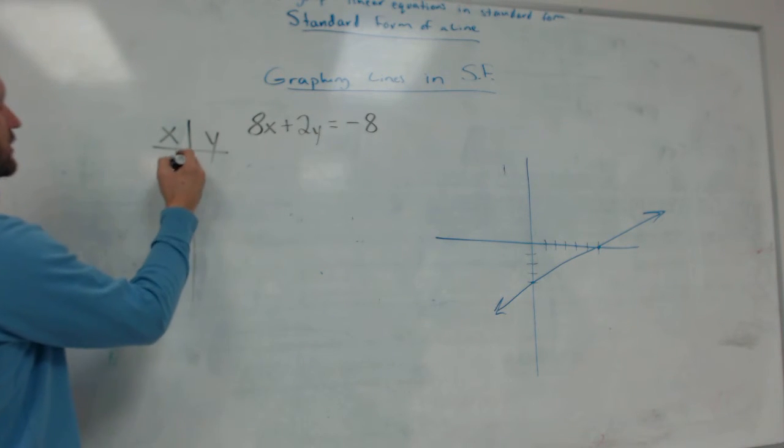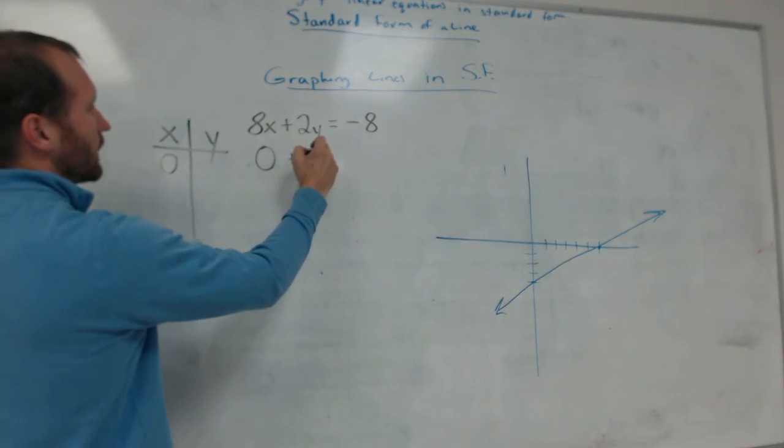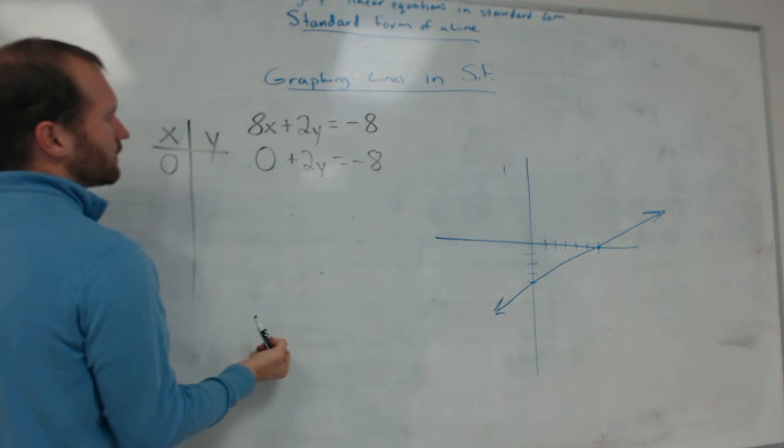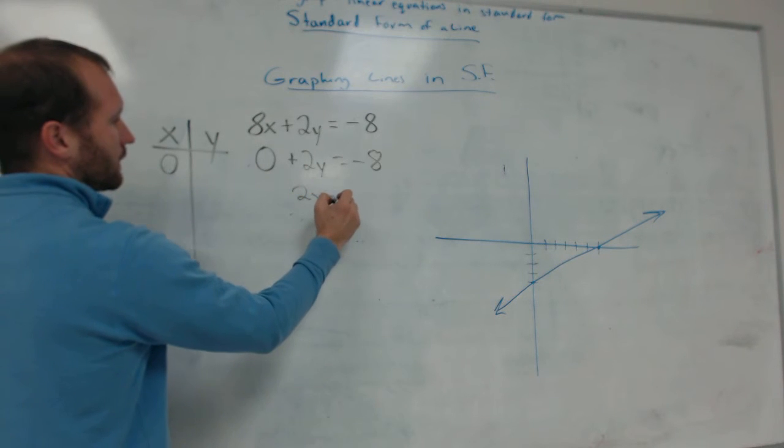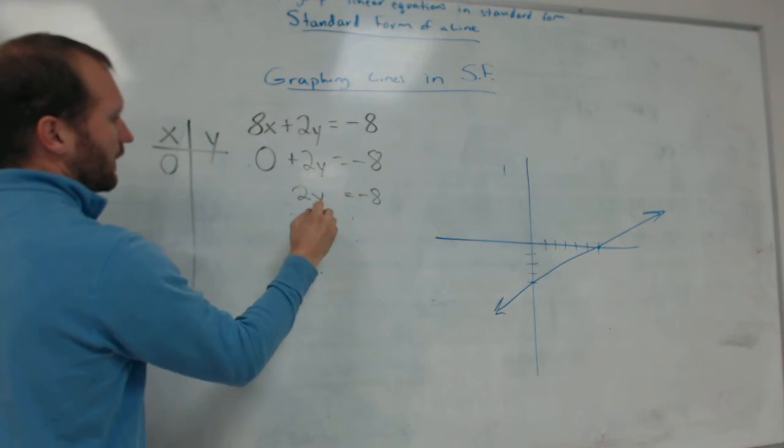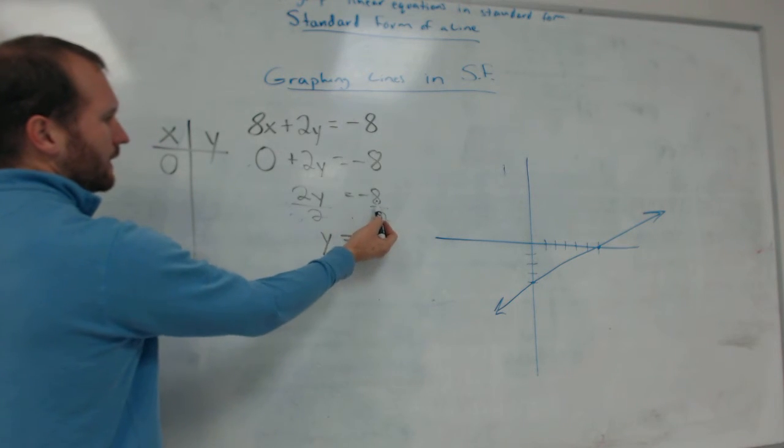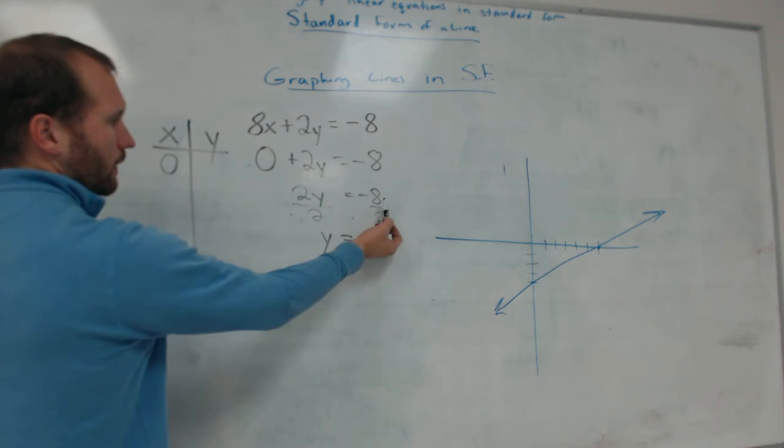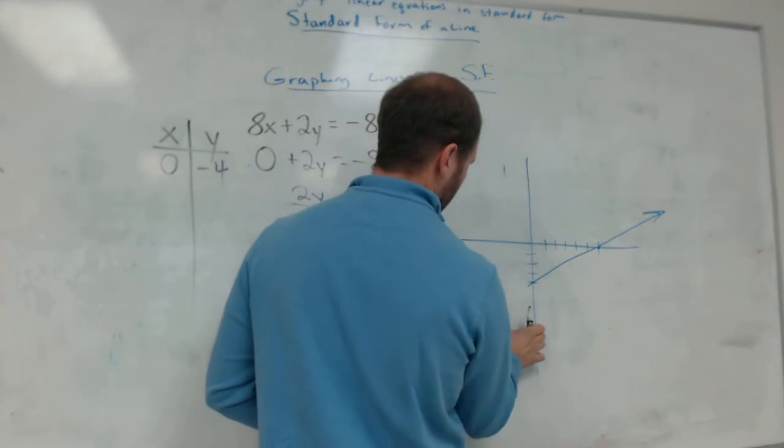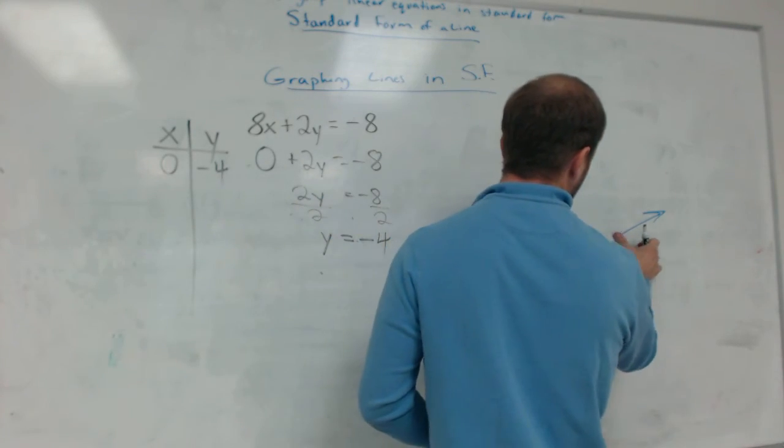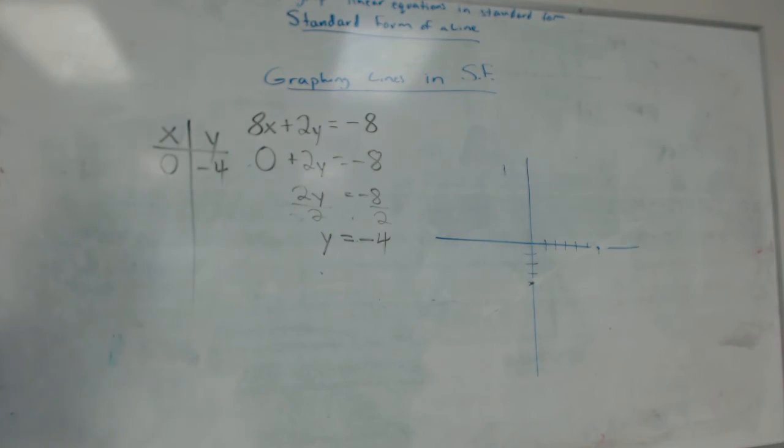Make a T-chart. First, let's choose 0 for x. If x is 0, this is going to be 0 plus 2y equals negative 8. 2y equals negative 8. So I divide by 2 and find that y, a negative divided by a positive is a negative number. 8 divided by 2 is 4. So y is negative 4. Okay, so y is negative 4 right there.